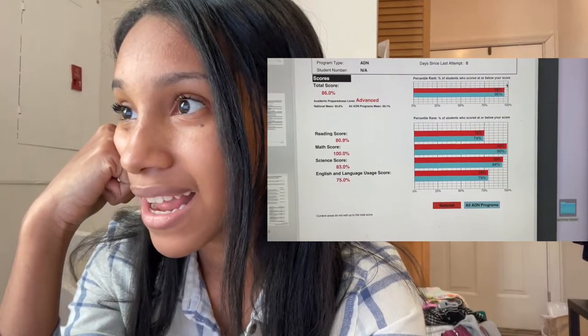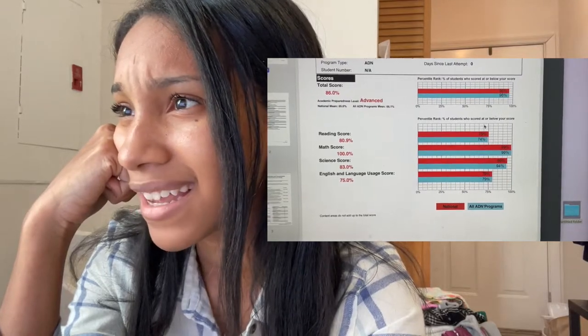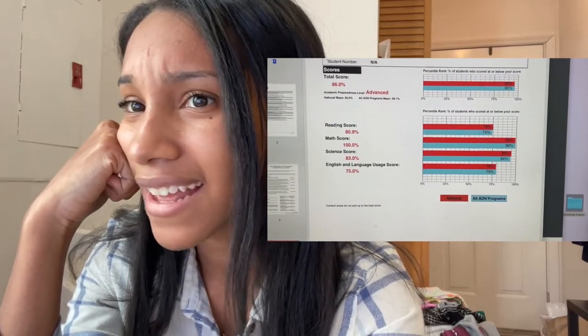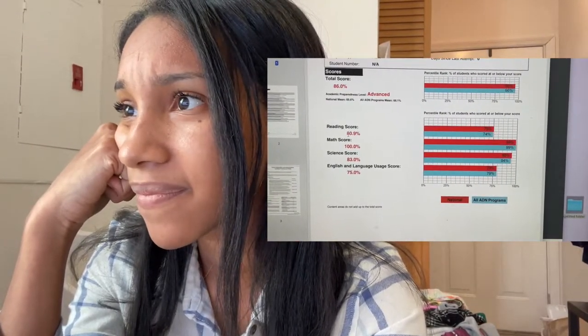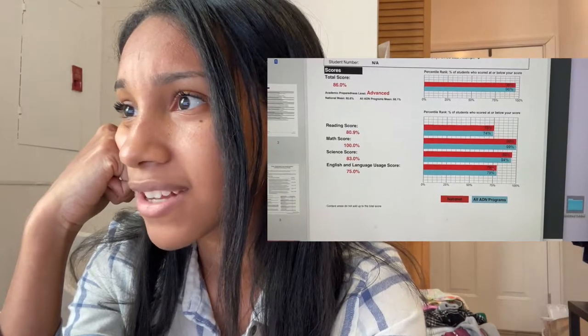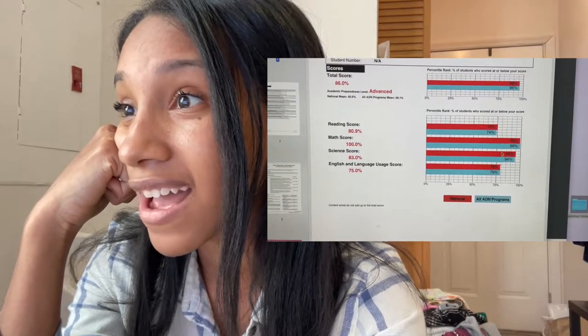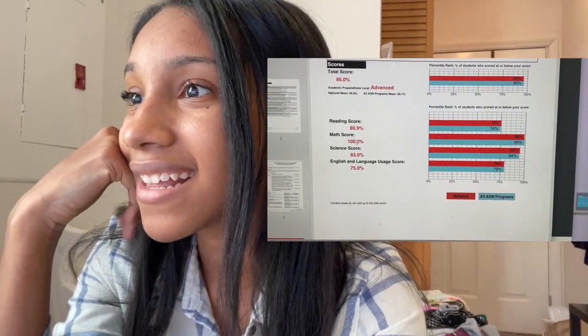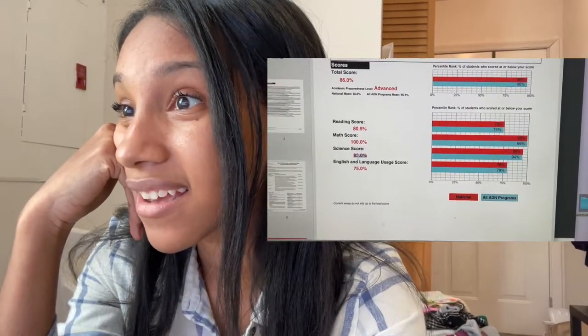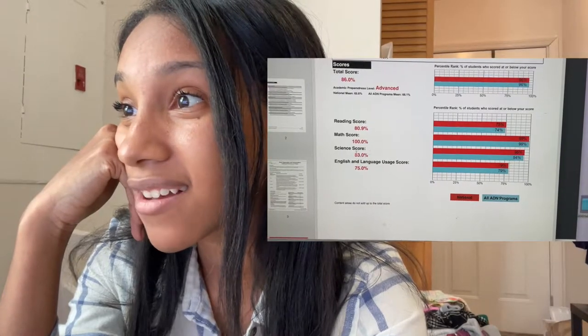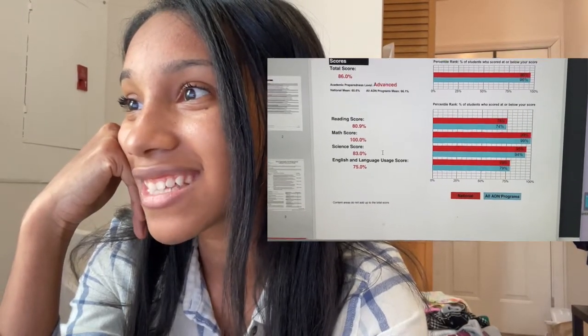National percentile — so I'm in the 96th percentile. Apparently I'm advanced. My national percentile for reading is 75, math is 99. I got an 83 in science, which is the 95th percentile — I guess that's pretty good. English is 79. So math and science I'm really strong in; reading and English I knew were going to be weaker. But I can't believe I got a hundred percent — I got a perfect score in math. Go me!